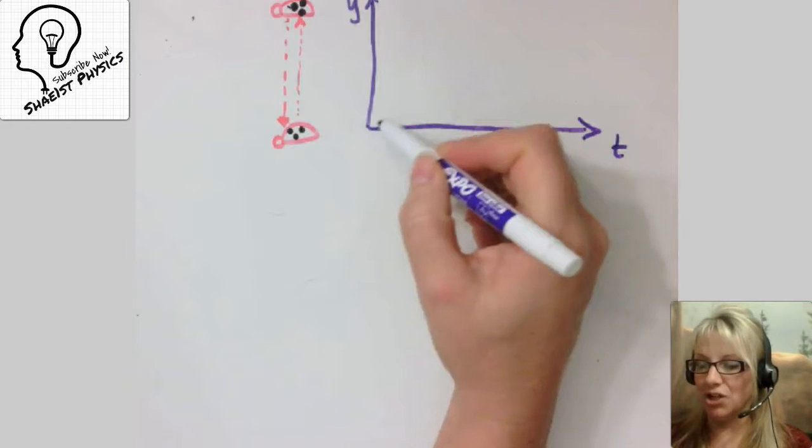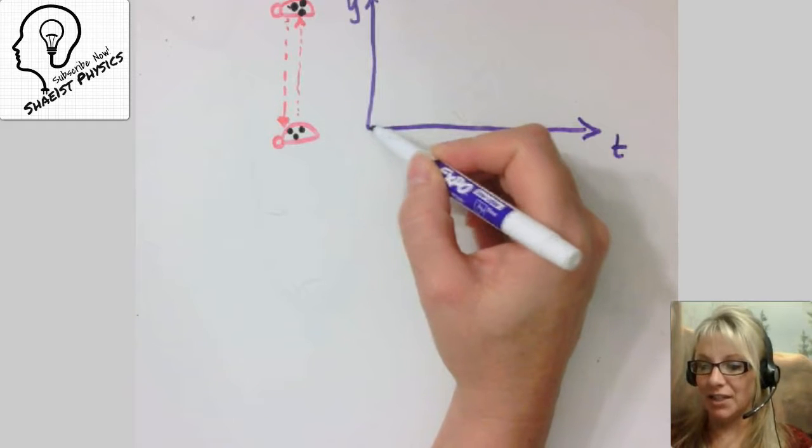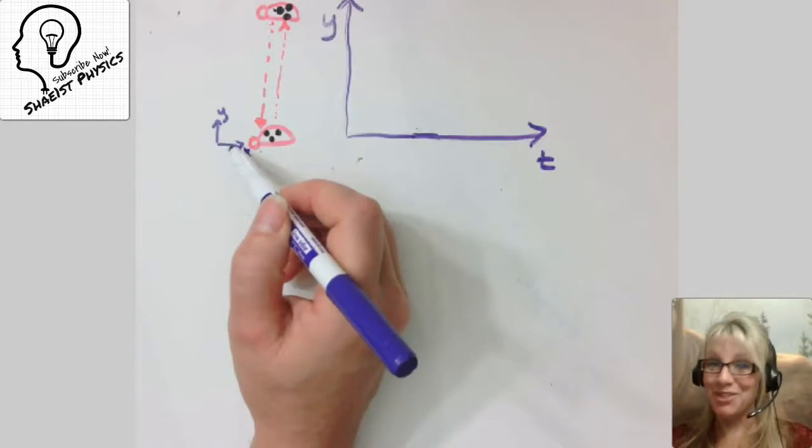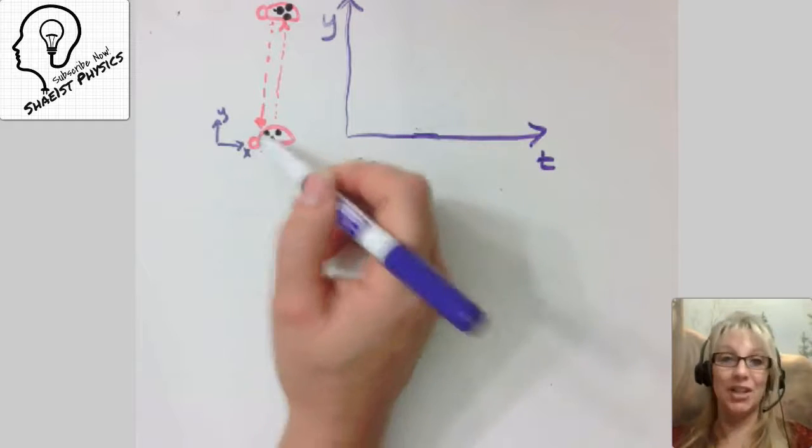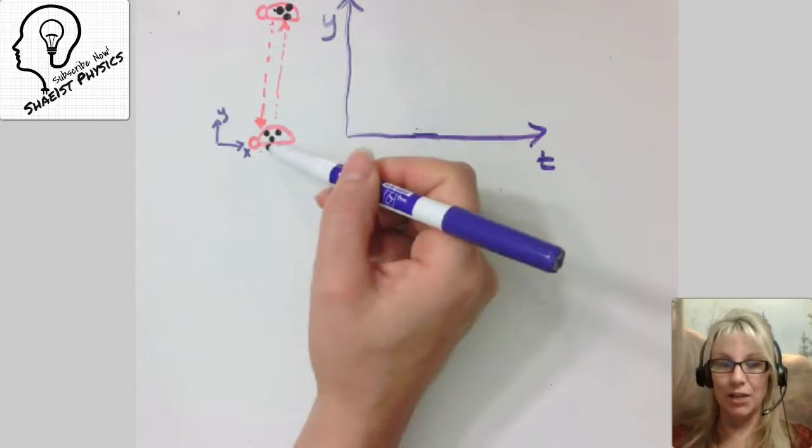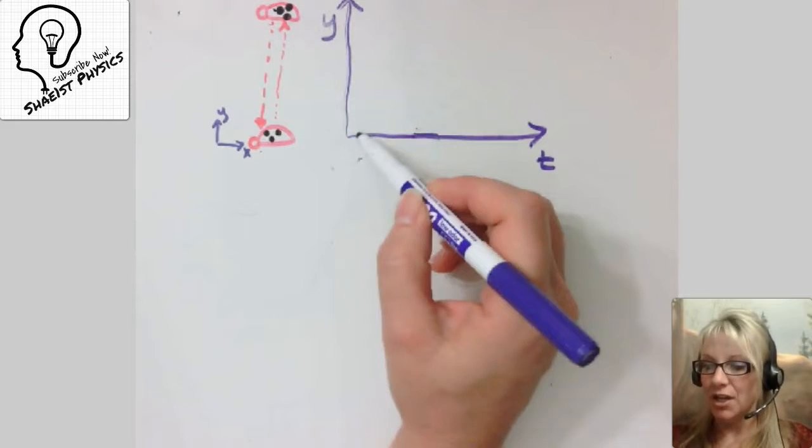When I show you that the position of this ladybug, we're just going to call this position where we're starting to gently toss that ladybug, is going to be y equals 0 and then positive y is going to be in the upward direction.